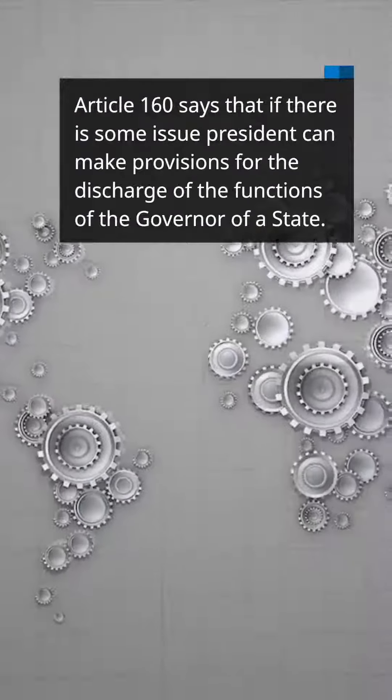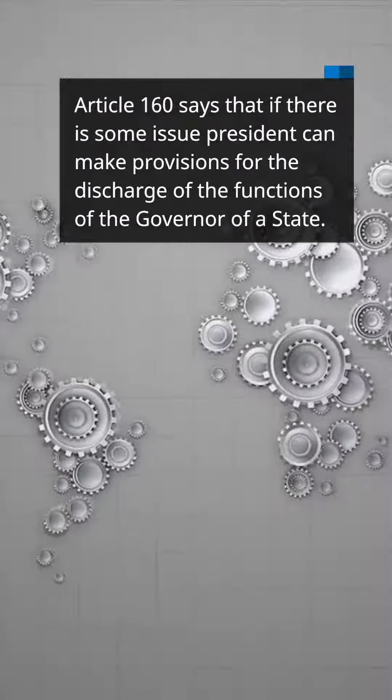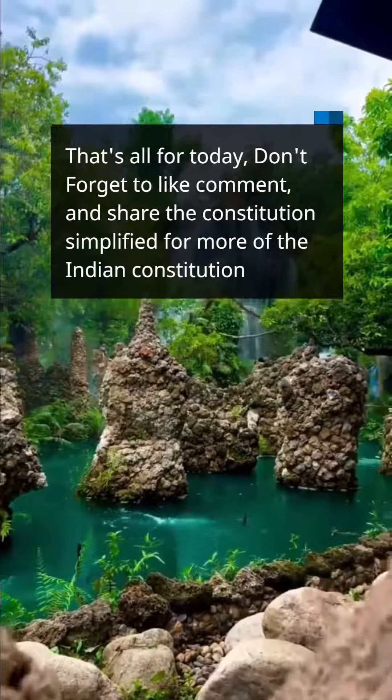Article 160 says that if there is some issue, the president can make provisions for the discharge of the functions of the governor of the state.